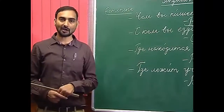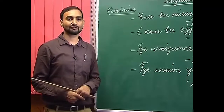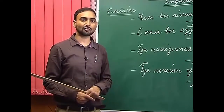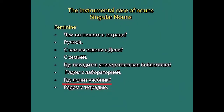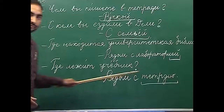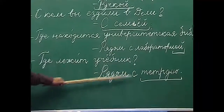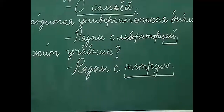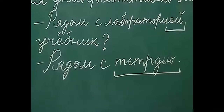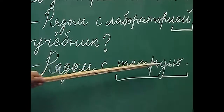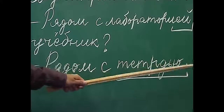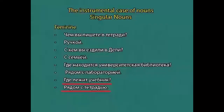The next ending is feminine nouns with a soft sign ending. 'Где лежит учебник?' — where is the textbook lying? Рядом с тетрадью — next to the notebook. Тетрадь is a feminine noun which ends with a soft sign. When we use this noun in the instrumental case, we don't drop anything — we simply add -ю after the ending: тетрадь becomes тетрадью. Учебник лежит рядом с тетрадью — the textbook is lying next to the notebook.